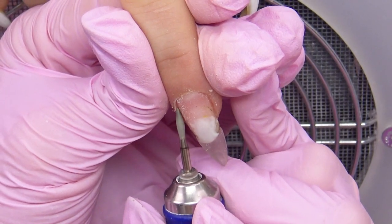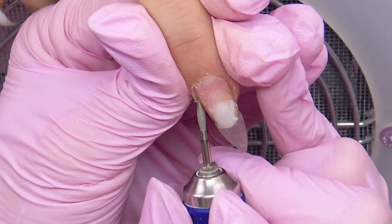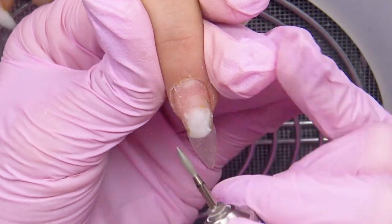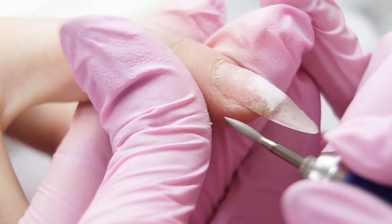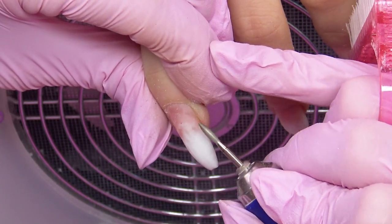Working with the cuticle, I'll be using a diamond flame drill bit, 0.23 in diameter. Forward position, I'm processing the left sides. Reverse position, I'm working on the right ones.